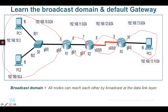If PC1 would like to ping PC3, they belong to multiple different networks, so in this case you need to have a default gateway. Where should you put the default gateway? You should put it at Router 1, which is directly connected to your PC. Router 1 will have two interfaces.